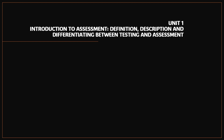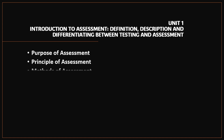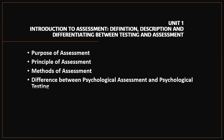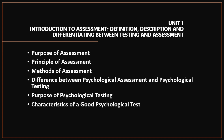Let's start with the important questions of each block. From Block 1, Unit 1 is an important unit and you need to learn it without skipping, for both the June and December term-end exams. From Unit 1, you need to look into: purpose of assessment, principles of assessment, methods of assessment, difference between psychological assessment and psychological testing, purpose of psychological testing, characteristics of a good psychological test, and types of psychological test.